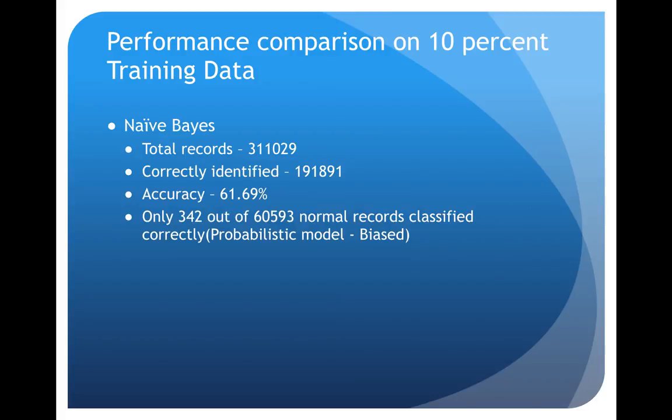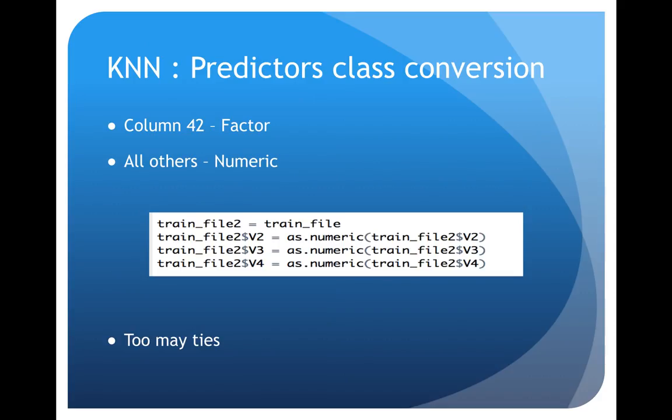One important observation here is that it only identified 342 out of 60,593 normal records correctly. This is because in the data there are more bad records than there are good records, and Naive Bayes is a probabilistic model so it is biased.